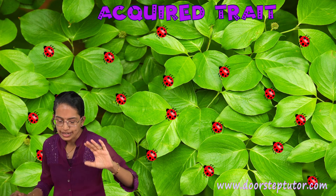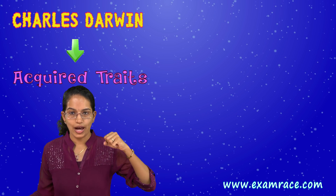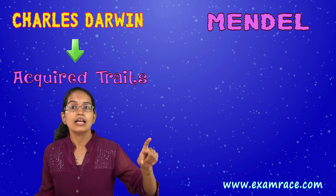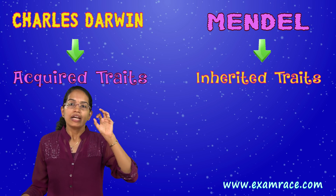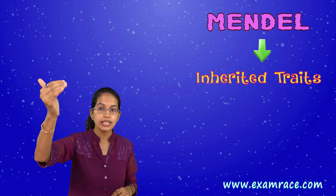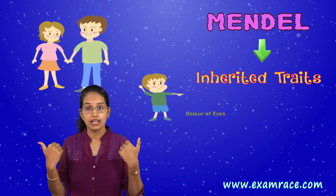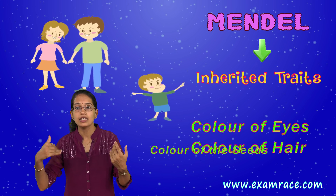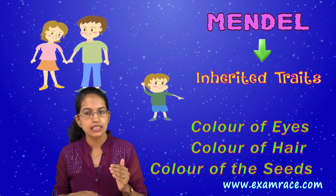So Darwin explained two important things. Darwin explained the concept of acquired traits; however, Mendel at the same time tried to explain inherited traits. Inherited traits according to Mendel are those traits which you inherit from the parent generation — for example, the color of the eyes, the color of the hair, the color of the seed.